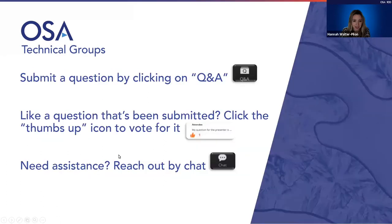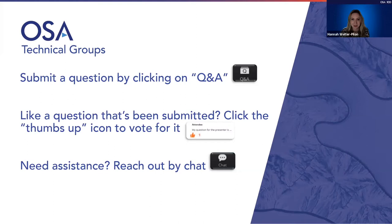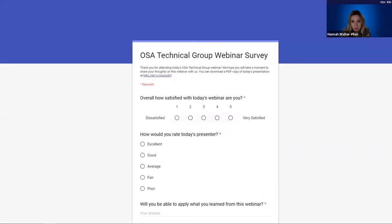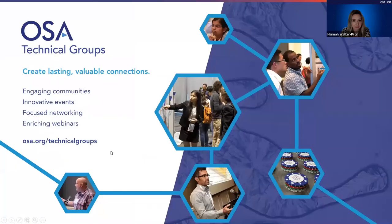Before we begin, questions will be addressed at the end of the talk. Submit questions by clicking the Q&A button at the bottom of your screen. You can also upvote questions from fellow attendees. At the end of the webinar you'll be prompted to complete a short survey. This webinar is being recorded, and a link to the recording and a PDF copy of the slides will be emailed to you within 48 hours.